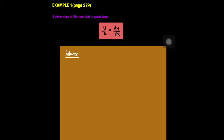Bismillahirrahmanirrahim. Now look at Example 1, page 279: solve the differential equation y over x is equivalent to dy over dx. The first step is to separate the variables: y/x = dy/dx becomes y dx equivalent to x dy.